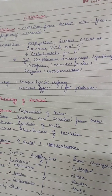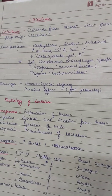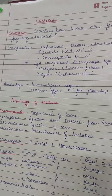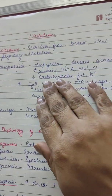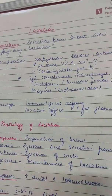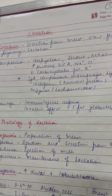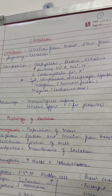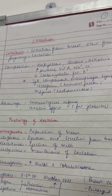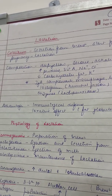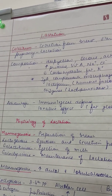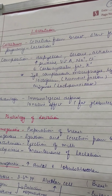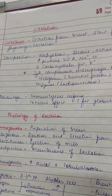Hello students, today I am going to teach you on lactation. Colostrum is the initial secretion which is released from the breast. These secretions start from pregnancy only and they continue for the first 3 to 4 days. That fluid is called as colostrum.